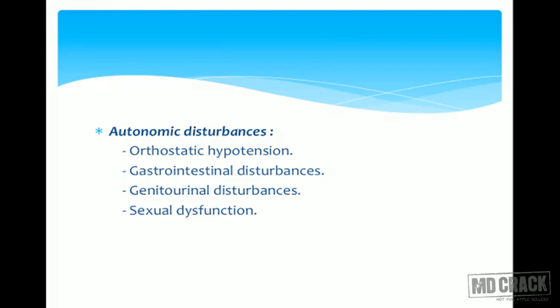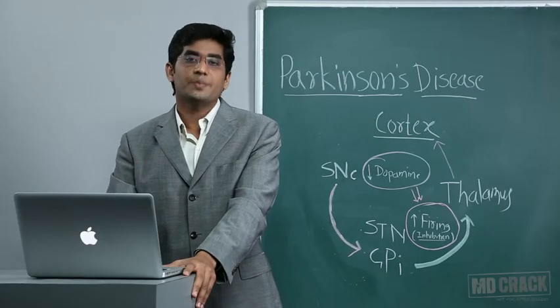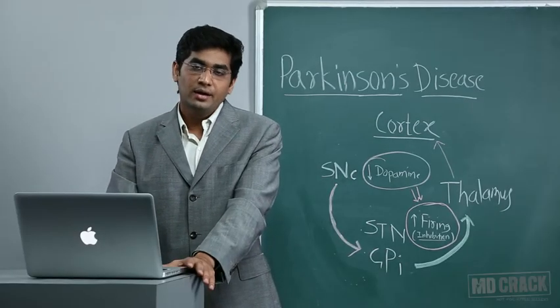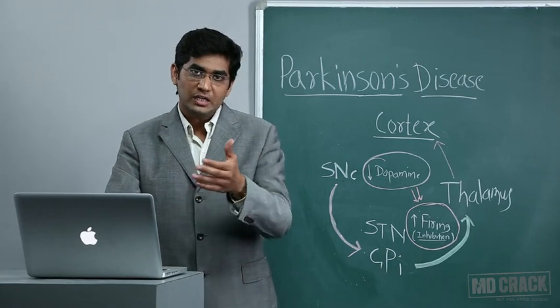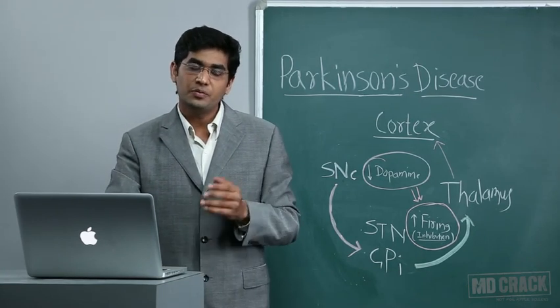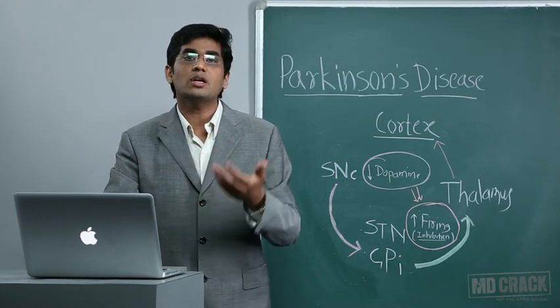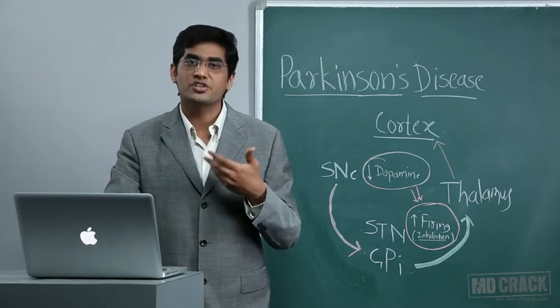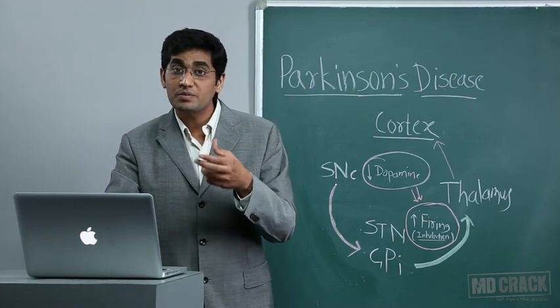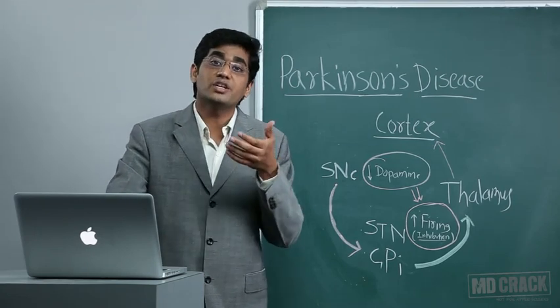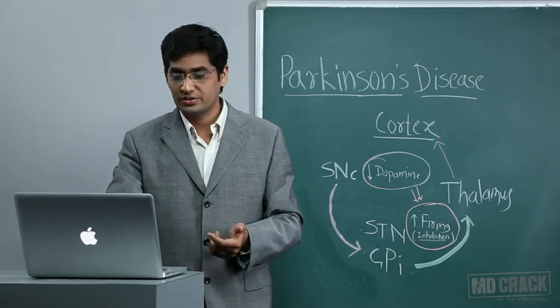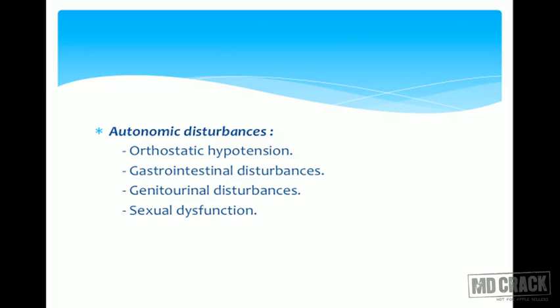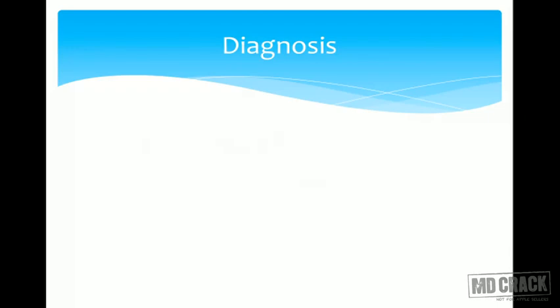Gastrointestinal disturbances: the most common is constipation, which is quite an early feature of Parkinson's disease — even before motor features like tremors or rigidity appear, constipation may be present for four to five years earlier. Other autonomic disturbances include genitourinary disturbance and sexual dysfunction.